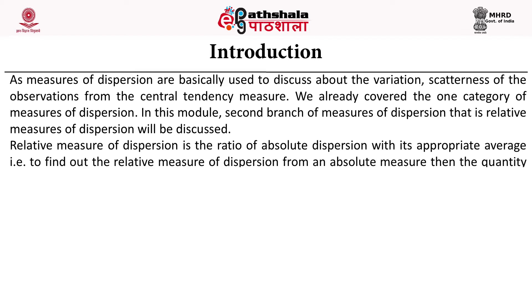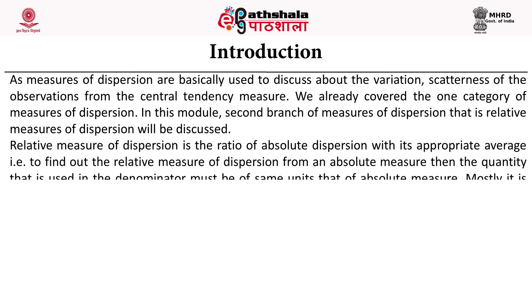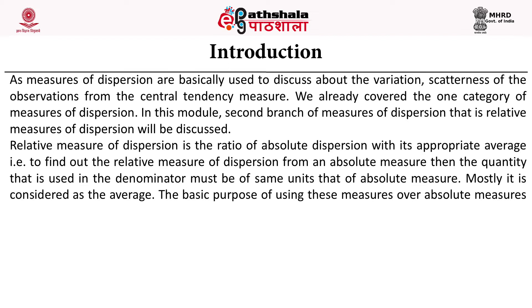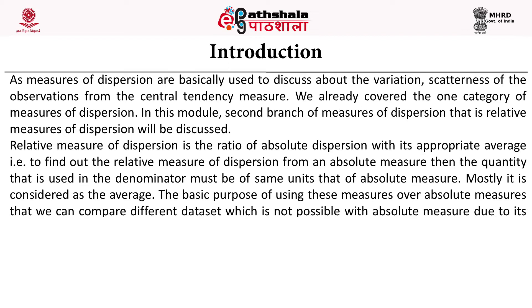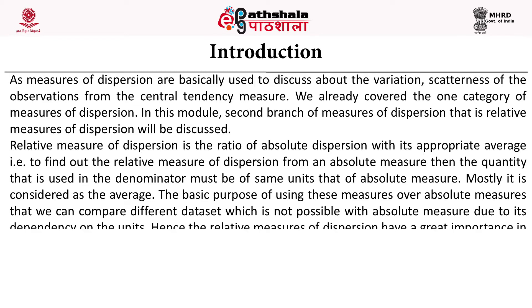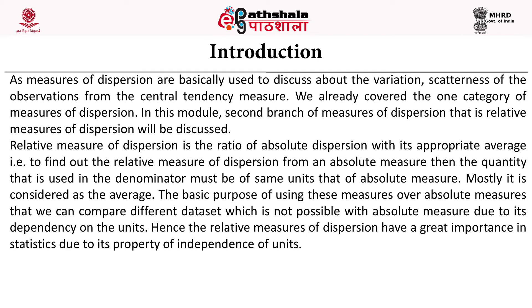Relative measure of dispersion is a ratio of absolute dispersion with its appropriate average. To find out the relative measure of dispersion from an absolute measure, the quantity used in the denominator must be of the same unit as the absolute measure — mostly it is considered as the average. The basic purpose of using these measures over absolute measures is that we can compare different datasets, which is not possible with absolute measures due to their dependency on units. Hence the relative measure of dispersion has great importance in statistics due to its property of independence of units.